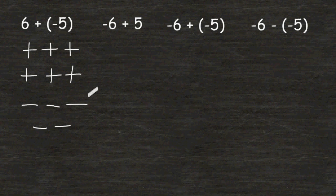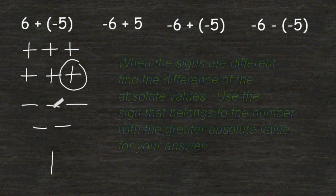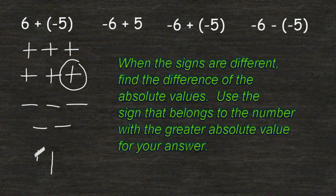Now whenever you have different signs, what you must do is find the difference of the absolute values of each of the numbers. So if we subtract 6 and 5 with each other, that would leave us with 1. And the sign that we use for the answer is going to depend on what we had more of. And we had one more positive sign than we had negative signs, so the positives won out.